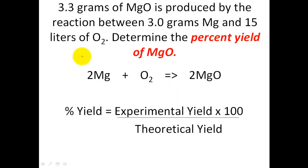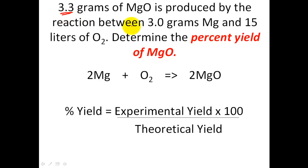In this problem, 3.3 grams of magnesium oxide is produced by the reaction between 3 grams of magnesium and 15 liters of oxygen. Please determine the percent yield of MgO. The first thing we need to do is label the reaction. The reaction is listed right down here, and it's balanced. The first number we see is 3.3 grams of something — that's 3.3 grams of magnesium oxide.